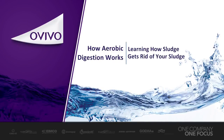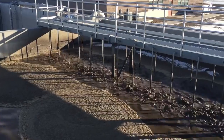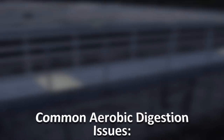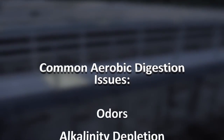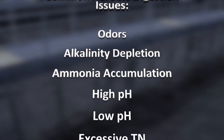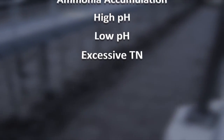This video will describe the biological processes associated with aerobic digestion and their corresponding chemical reactions. Since aerobic digestion utilizes microorganisms to degrade organics, it is very important to understand these biological processes and their associated chemical reactions. If the chemical reactions are not fully understood, issues such as odors, alkalinity depletion, ammonia accumulation, high pH, low pH, and excessive total nitrogen going back to the head of the plant can occur.